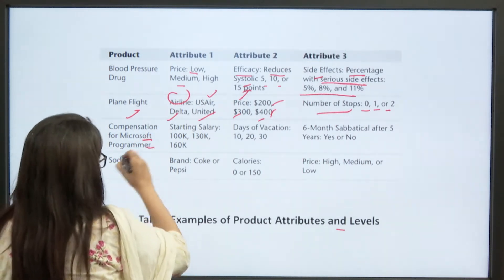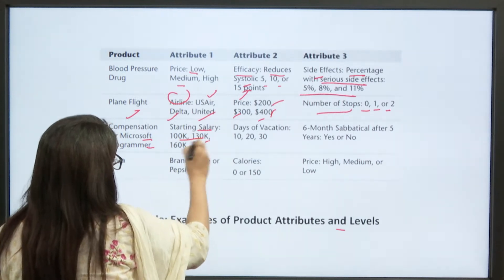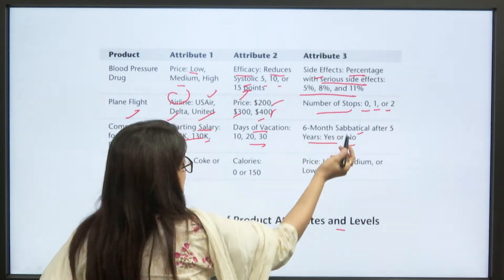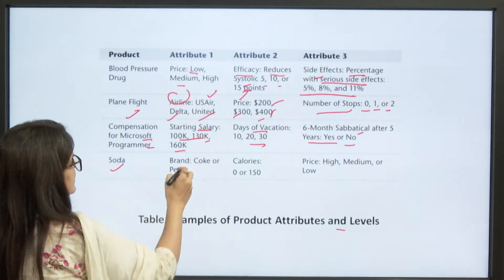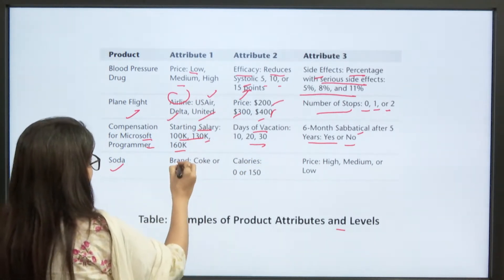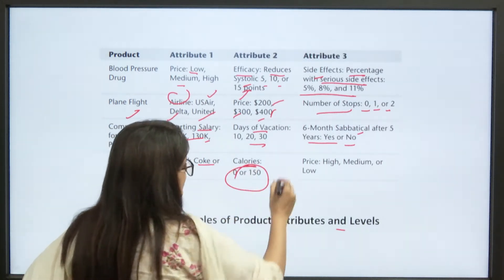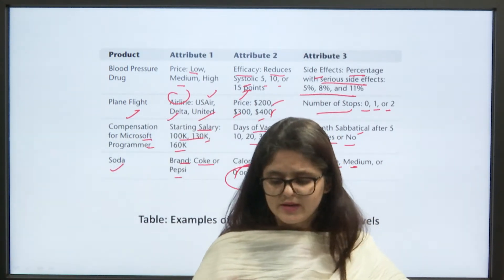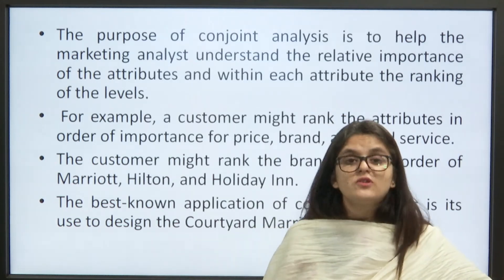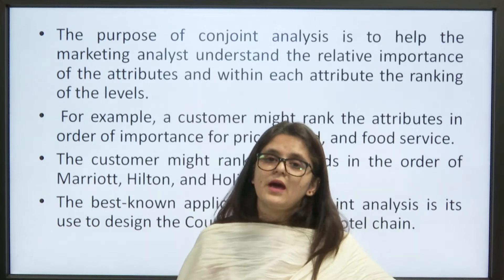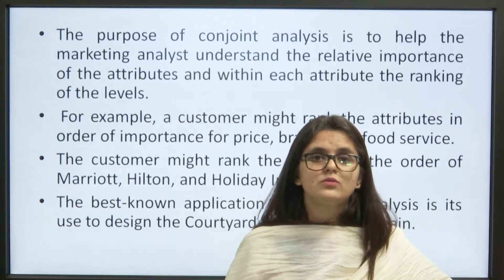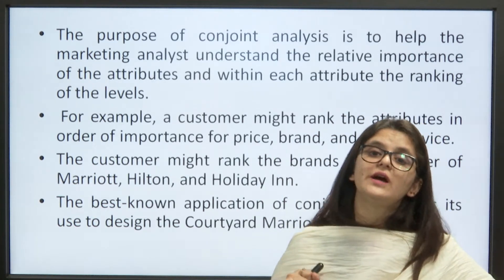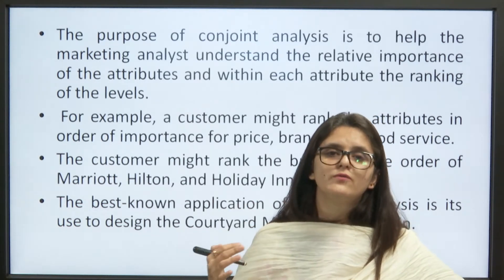For Microsoft programmer compensation: starting salary can be $100K, $130K, or $160K. These are how various attributes are considered. The purpose of conjoint analysis is basically to make the market analyst understand the relative importance of the attributes and within each attribute, the ranking of the levels.